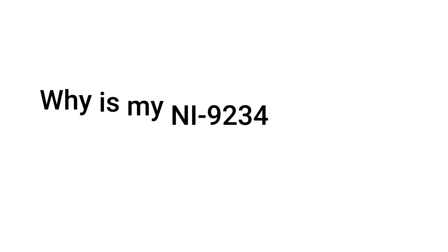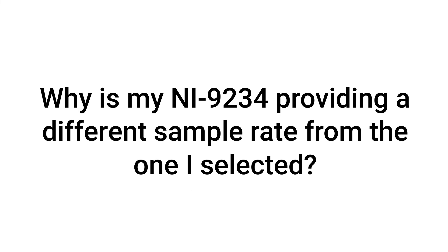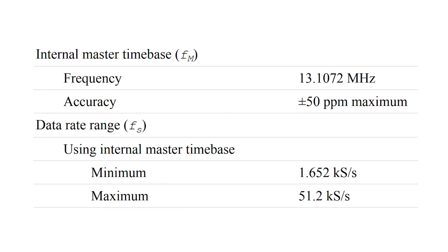Why is my NI9234 providing a different sample rate from the one I selected? The NI9234 has discrete sample rates. Correct sample rates from this module will follow this formula: FS = FM / 256 / N, where N is an integer between 1 and 31, and FM is the internal time base. By default, FM is 13.1072 MHz.